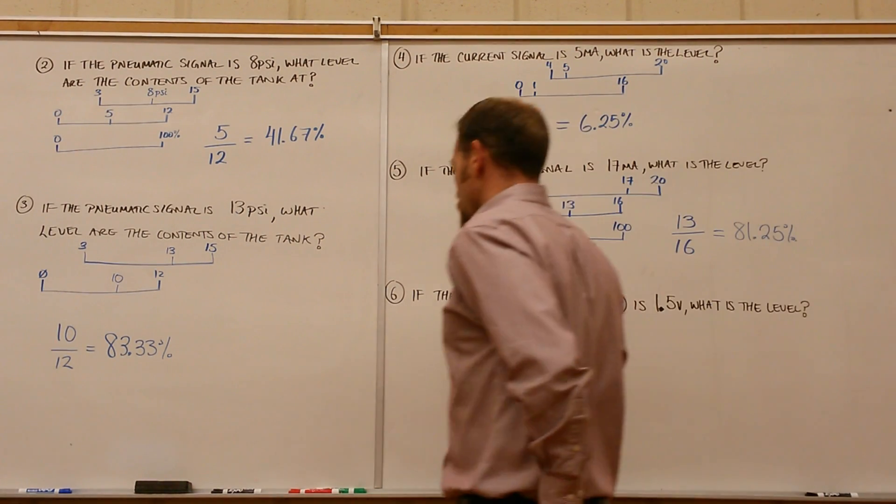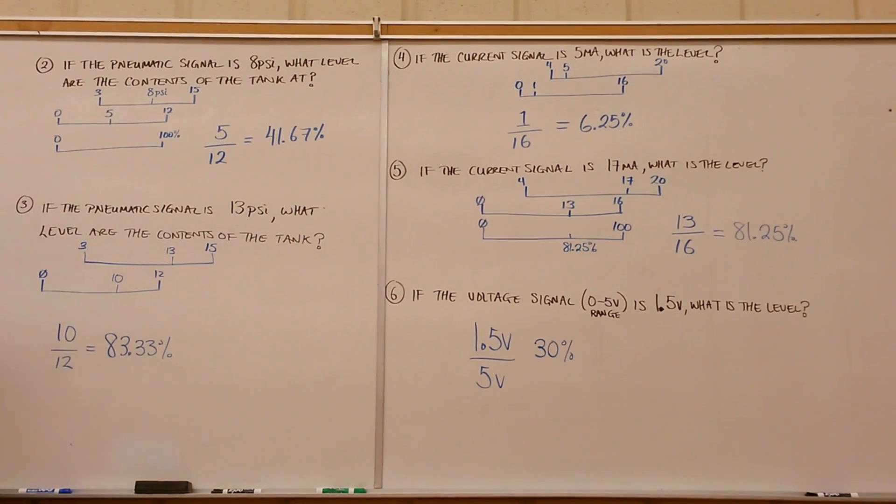Alright guys, the second part of the assignment has a few word problems. The first one says: if the pneumatic signal is 8 psi, what's the level in the tank? You can't just take 8 divided by 15 because that won't give you the right percentage, since this range of 3 to 15 is not referencing 0.